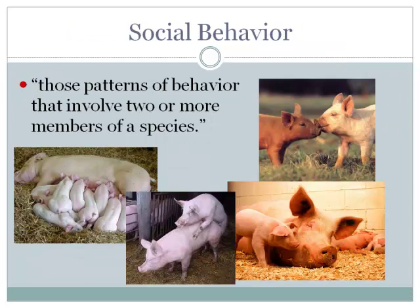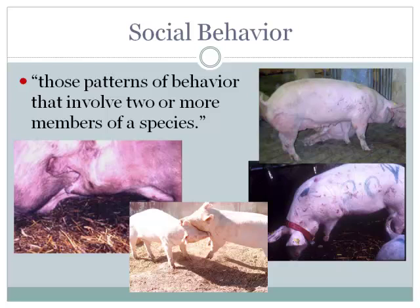We might define social behavior as those patterns of behavior that involve two or more members of a species. We can think about positive social behaviors, but we can also use the same definition for the less positive or negative aspects. That is what we're going to talk about — we house pigs in groups and can get these kinds of pictures from the animals.